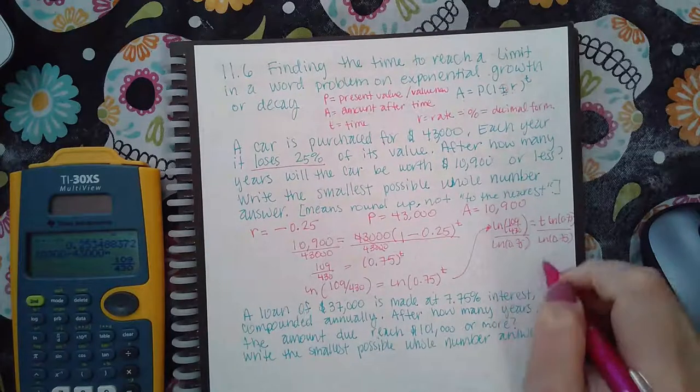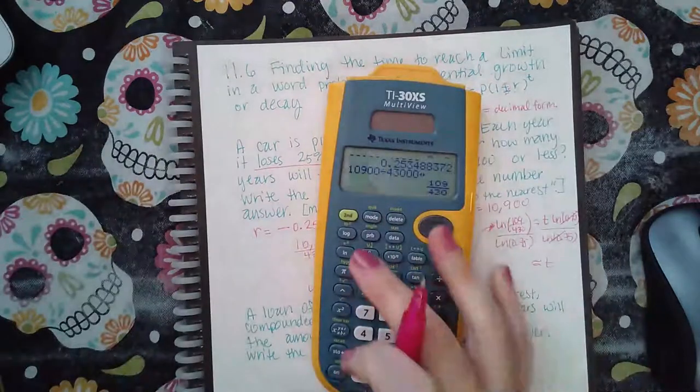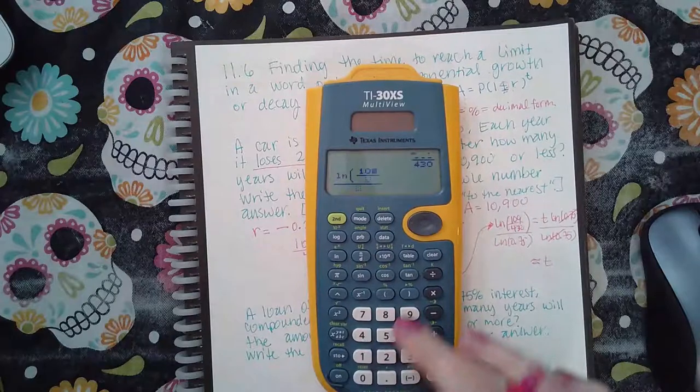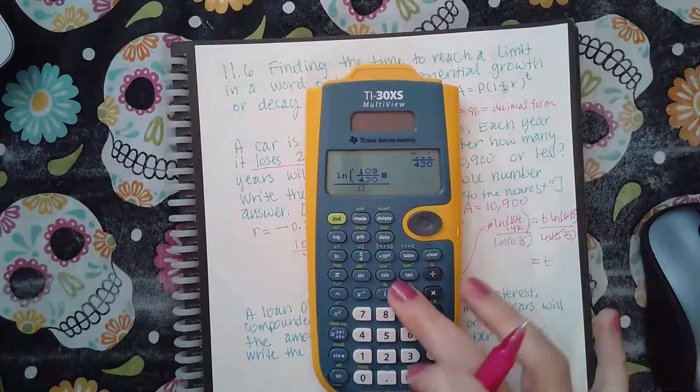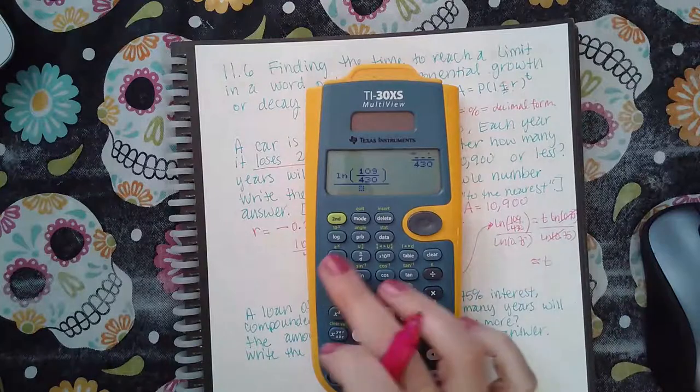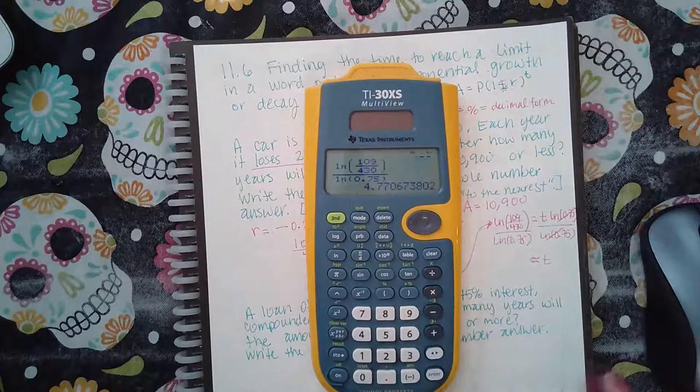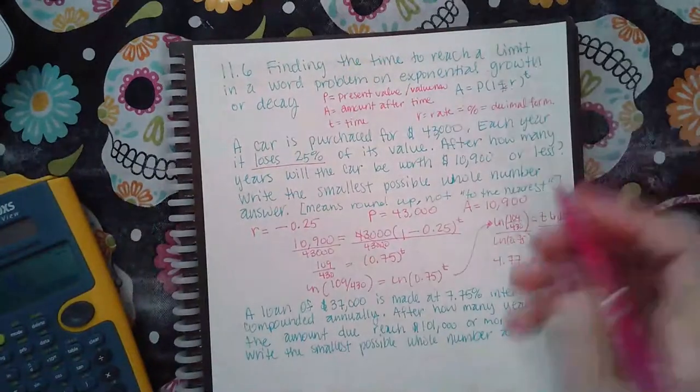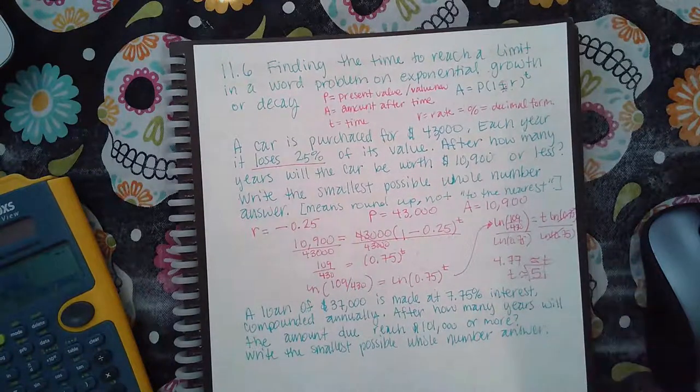And so then that cancels that, and I get T equals, and let's plug this in. So fraction ln of 109 over 430, and then ln of 0.75. And we get 4.77, which we already know is just going to round up. So T is approximately five years.